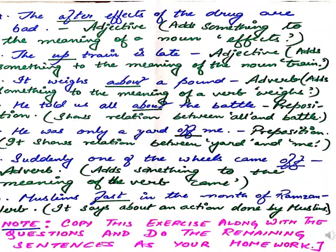Number 7 — 'He told us all about the battle.' Here 'about' is showing a relationship, so it is a preposition. Number 8 — 'He was only a yard off me.' Here 'off' shows the relationship between 'yard' and 'me' — a little bit of difference was there. So 'off' is used here as a preposition. Number 9 — 'Suddenly one of the wheels came off.' Here 'off' adds more meaning to the verb 'came' — what happened? It came off. So it is an adverb.